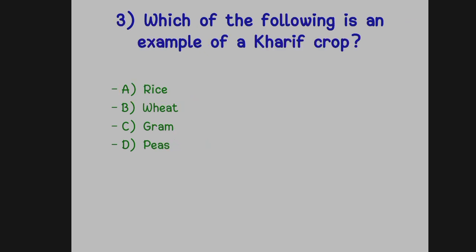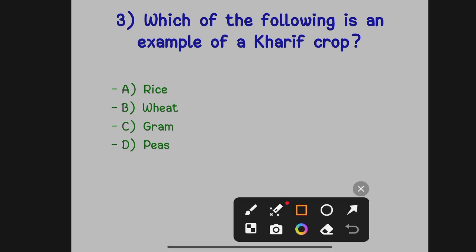Option A: Rice. Option B: Wheat. Option C: Gram. Option D: Peas. The correct answer is rice — rice is an example of a Kharif crop. The remaining three — wheat, gram, and peas — are examples of Rabi crops.